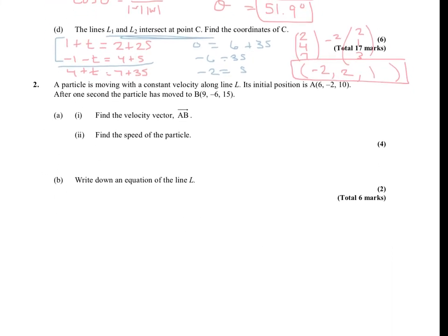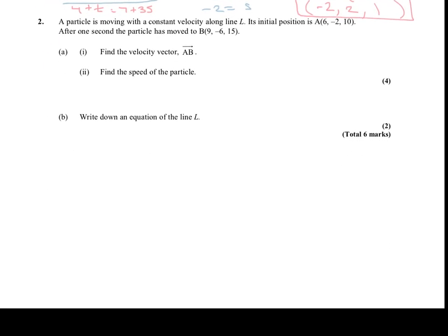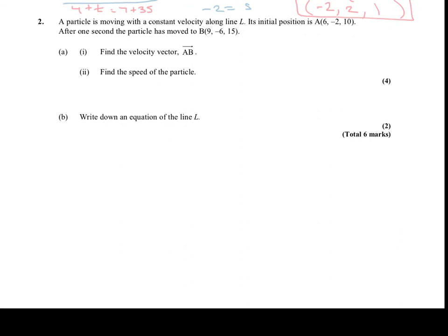Okay, let's look at one more problem. It says a particle is moving with a constant velocity along line L. Its initial position is A, and it gives us the point. After one second, the particle has moved to B, and it gives us the point. Find the velocity vector AB.